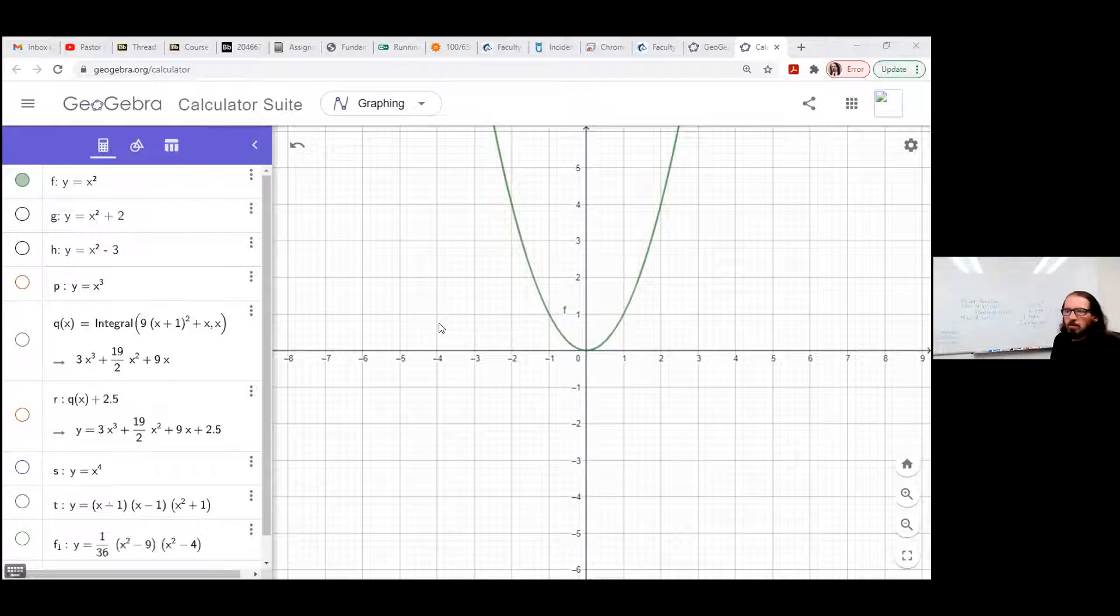What we mean by a turning point is a place where it switches from increasing to decreasing, or from decreasing to increasing. In other words, a place where we have at least a local minimum or local maximum. For the parabola, that's the vertex.